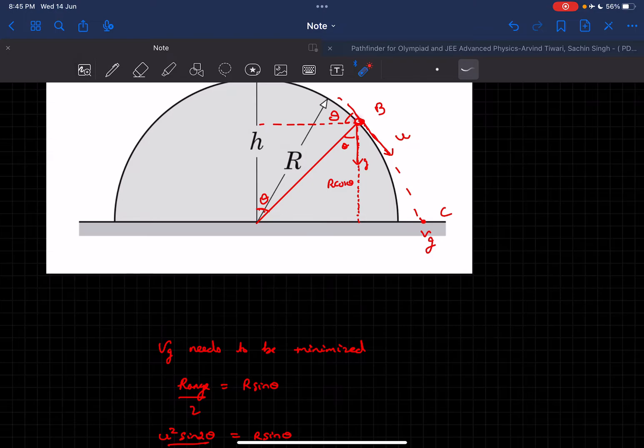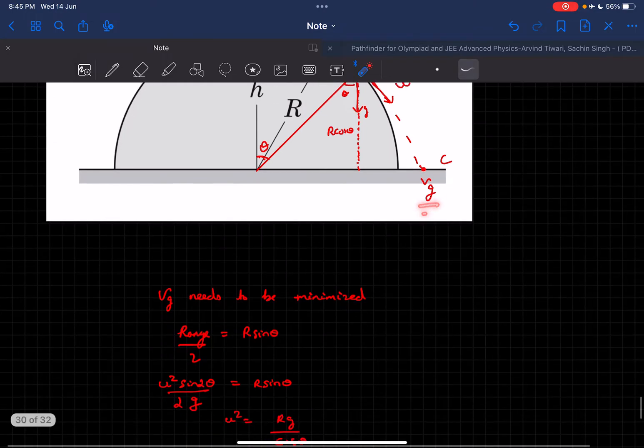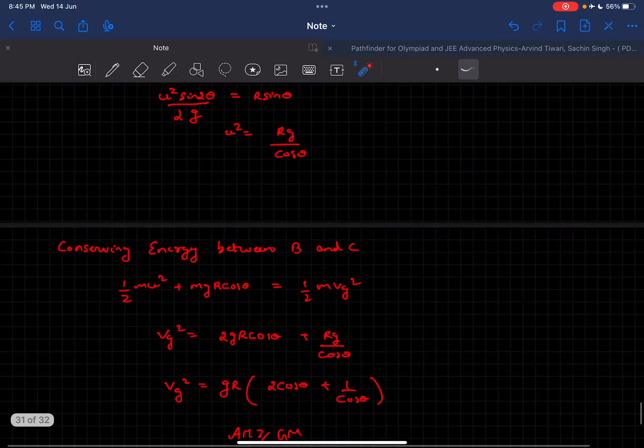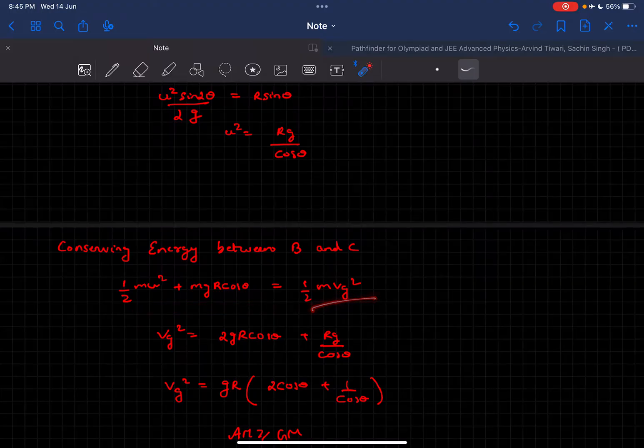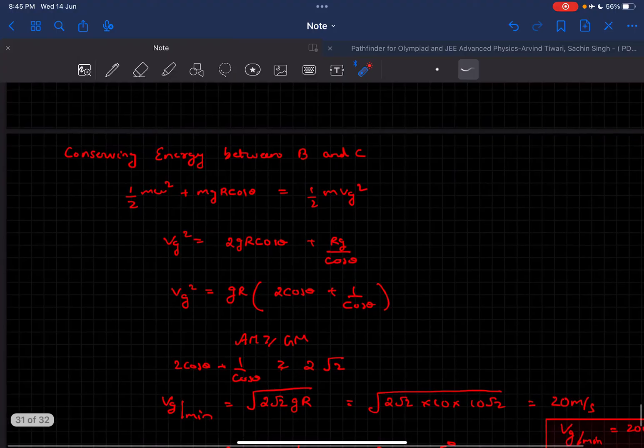Now we can conserve energy between point B and point C to get a condition for vg. Conserving energy: kinetic energy initial plus potential energy initial equals kinetic energy final plus potential energy final.